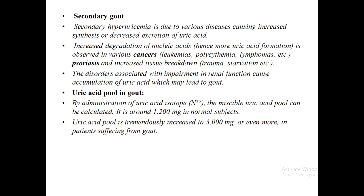Secondary gout arises from secondary hyperuricemia, which is due to various diseases causing either increased synthesis or decreased excretion of uric acid. Increased degradation of nucleic acids is observed in various cancers like leukemias, polycythemia, and lymphomas. Disorders associated with renal function impairment also result in accumulation of uric acid, which may lead to gout.